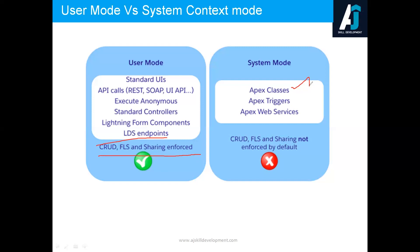We are writing code in such a way that it respects object level security, field level security, and it should not show any records to users who don't have access — that is called record level security. In the next video, we'll show you a problem of writing Apex code in system mode and explain the importance of record level security.